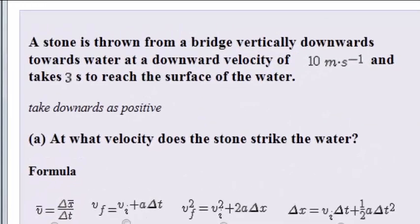A stone is thrown from a bridge vertically downwards towards water at a downward velocity of 10 meters per second and takes 3 seconds to reach the surface of the water. Take downwards as positive. The first question is: at what velocity does the stone strike the water?